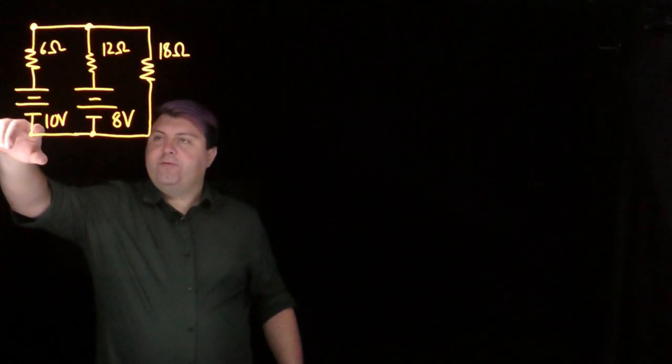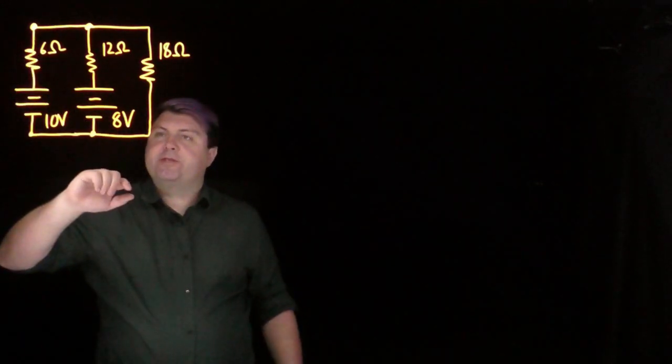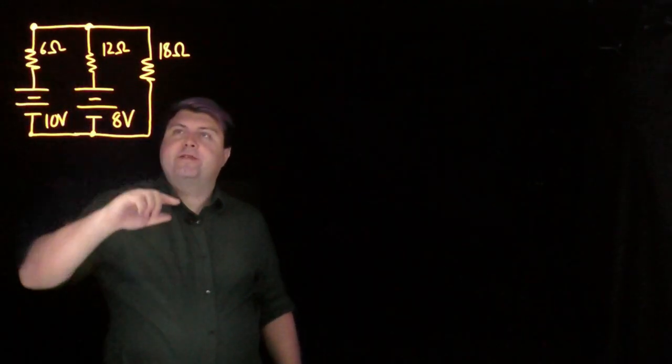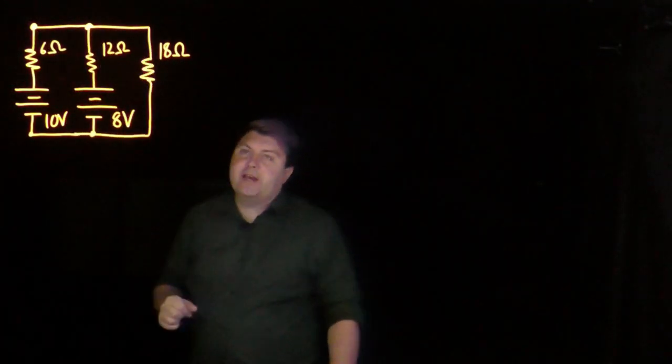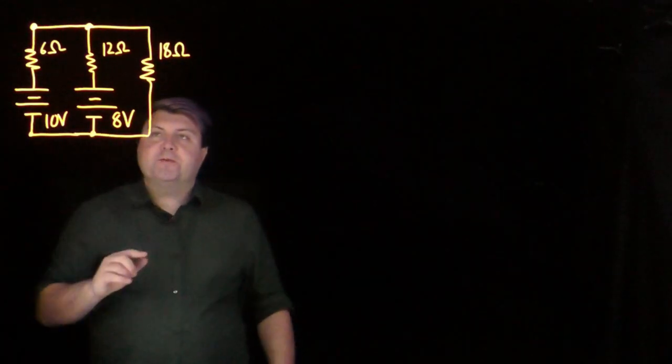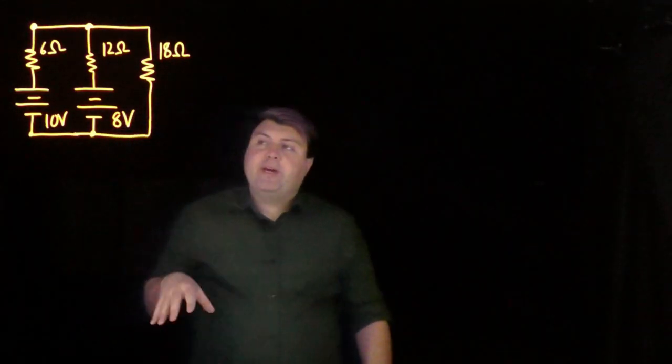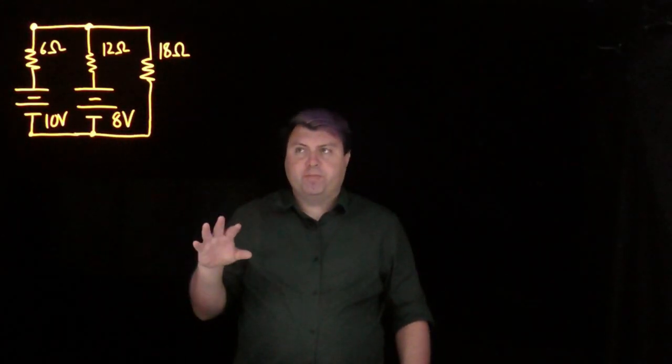Welcome! We have a 10 volt battery in series with a 6 ohm resistor, an 8 volt battery in series with a 12 ohm resistor, and both of them are then connected to this 18 ohm resistor. Because we have multiple batteries and multiple resistors, we can't do any simple series or parallel rules.